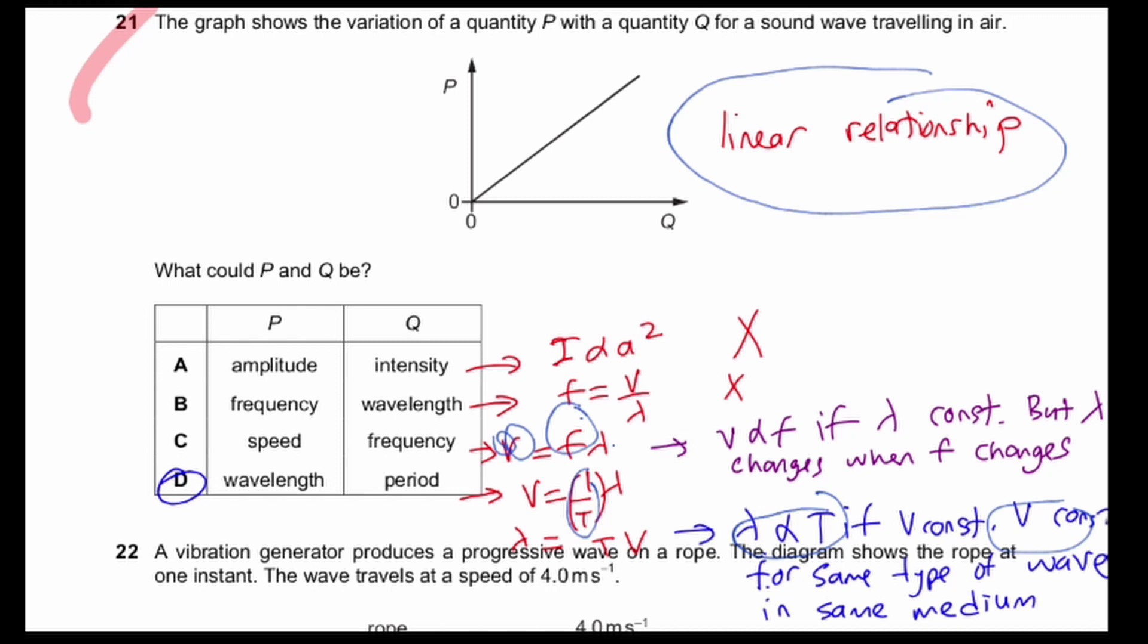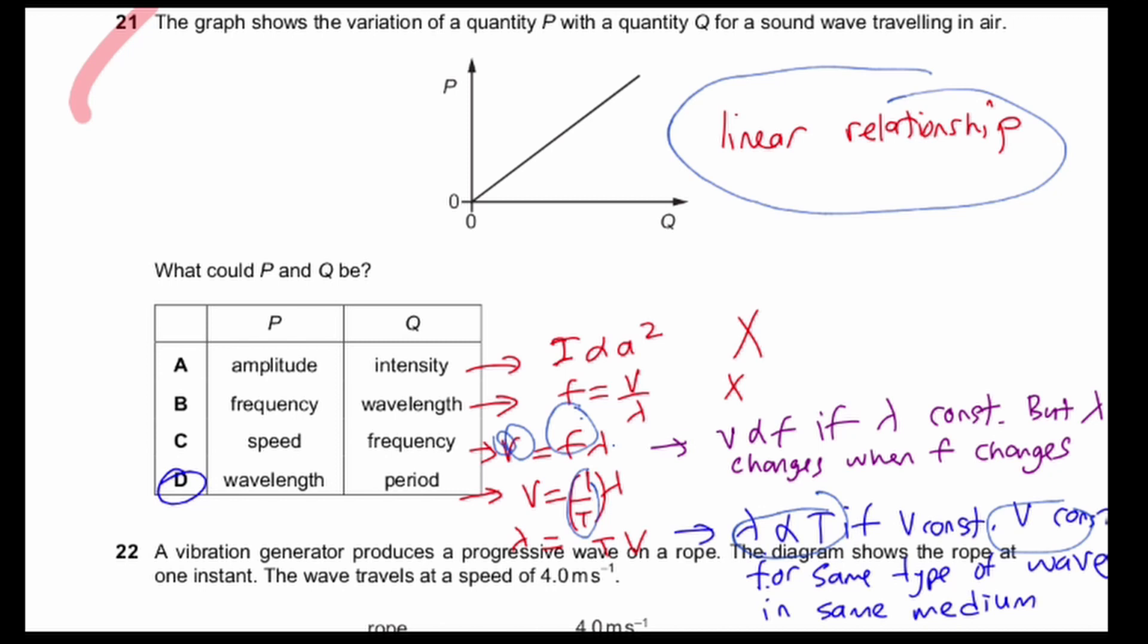Your lambda is proportional to T because V can be constant for the same type of wave in the same medium. Like, all EM radiation in vacuum have the same speed. So therefore, it'll be a linear relationship.